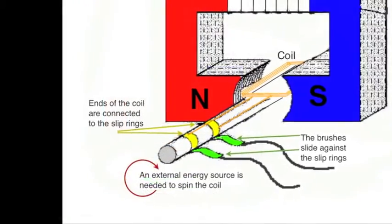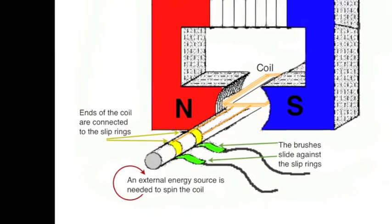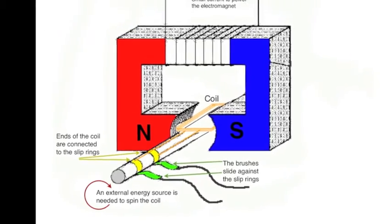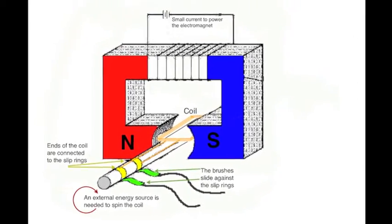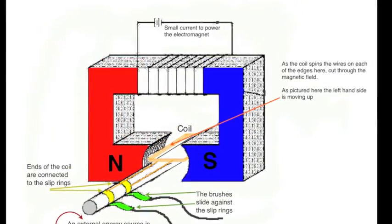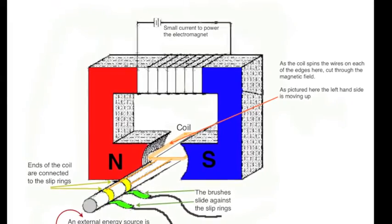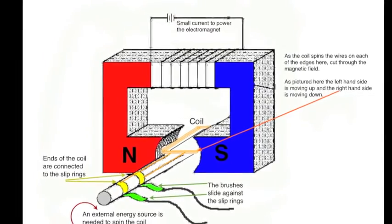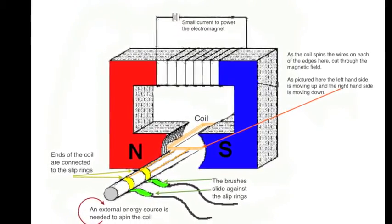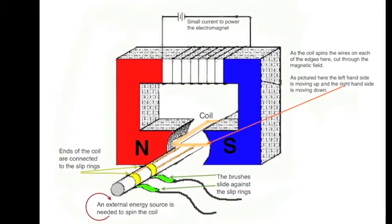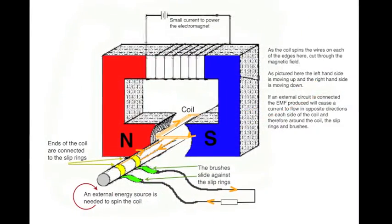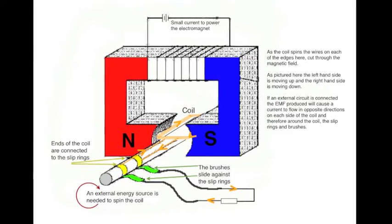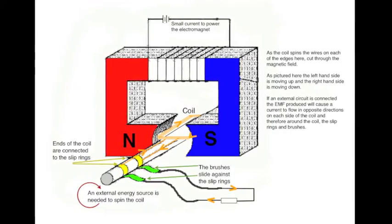To make the coil spin, an external energy resource is needed. In a power station, this is likely to be a turbine driven by steam. As the coil turns, the edges of the coil cut through the magnetic field, the left hand side here moving up and the right hand side moving down. If an external circuit is connected as shown here, then the EMF generated in the coil will cause a current to flow round the circuit and the coil.